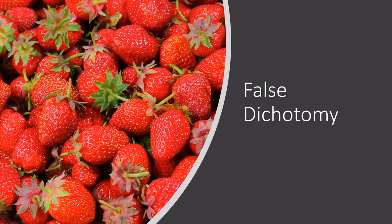Next we have false economy, or false dilemma. These are arguments that don't allow for gray areas — they force issues into black-or-white discussions without deviation. The problem is it fails to take into account other options. It's used a lot in advertising: "Buy our berries or you'll overpay." There are other places to buy berries, so this is a false dilemma.